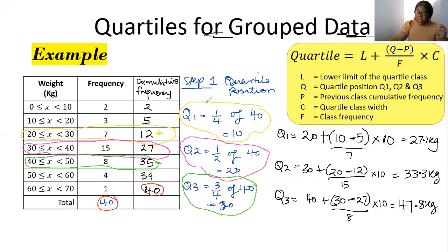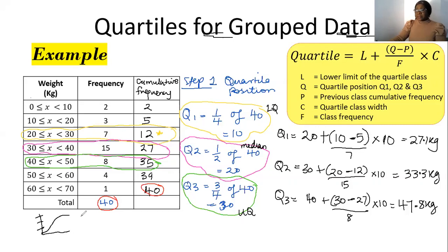Remember: quartile one is the same thing as the lower quartile, quartile two is the same as the median, and quartile three is the same as the upper quartile. To get the marks, make sure you show your quartile positions, draw your cumulative frequency, look for which class the quartile positions fall into, and apply everything to your formula — substitute into the formula, put it into your calculator, and that should give you the answer.